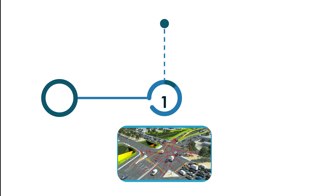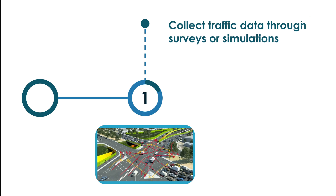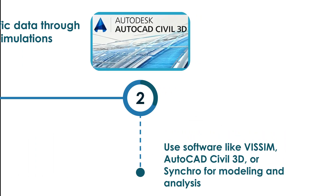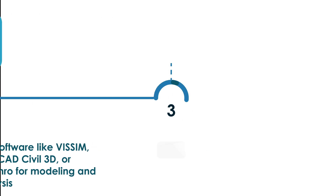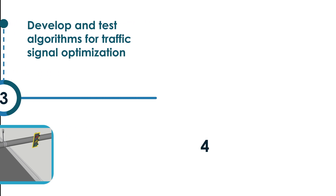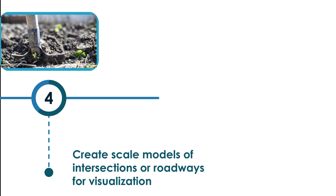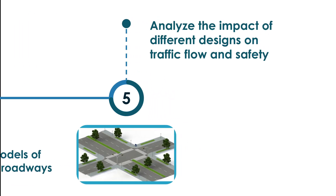Pedestrian safety analysis and infrastructure improvement are also trending. For prototype development, collect traffic data through surveys or simulations. Use software like VISSIM, AutoCAD, Civil 3D, or Synchro for modeling and analysis. Develop and test algorithms for traffic signal optimization, create scale models of intersections or roadways for visualization, and analyze the impact of different designs on traffic flow and safety.